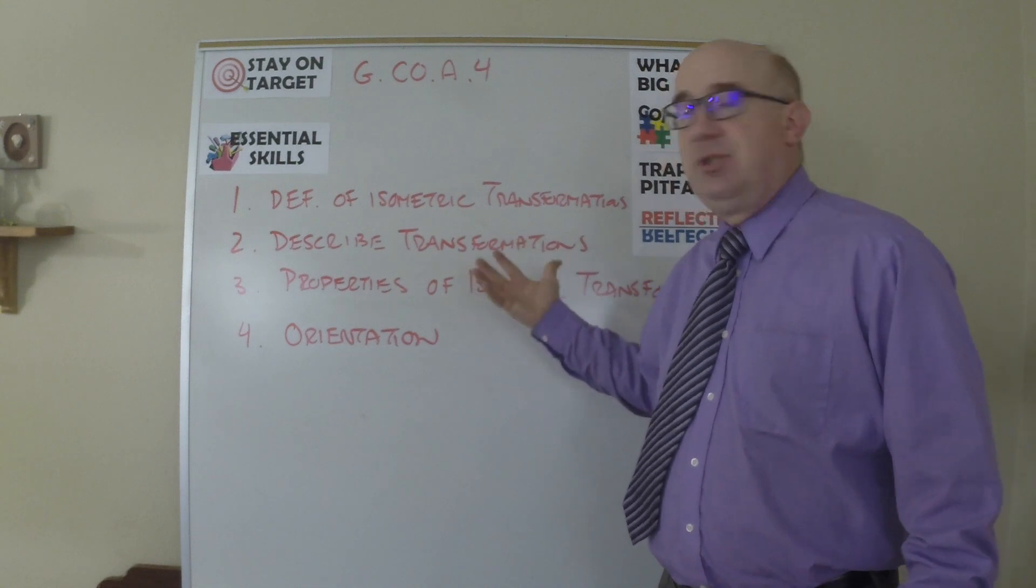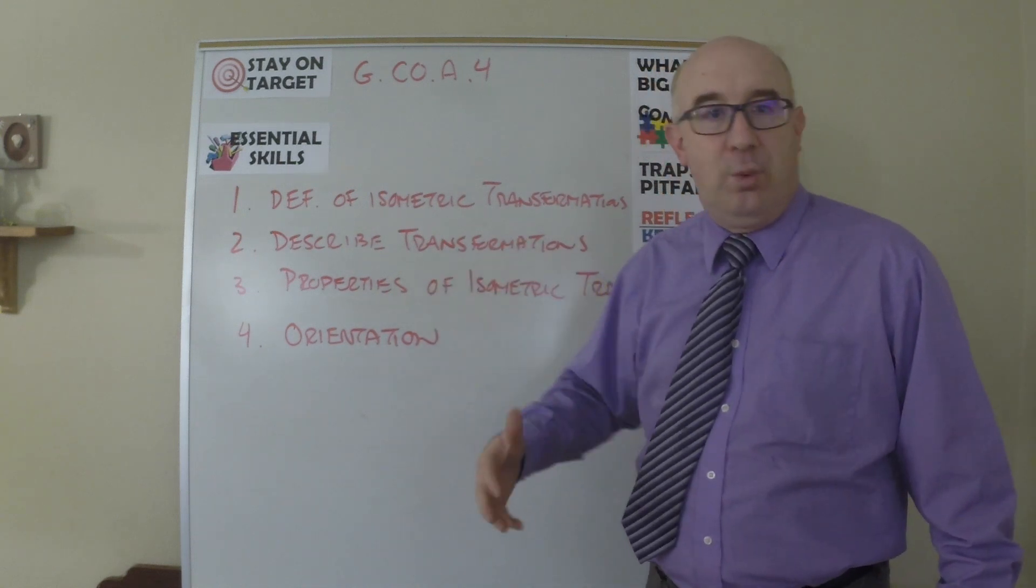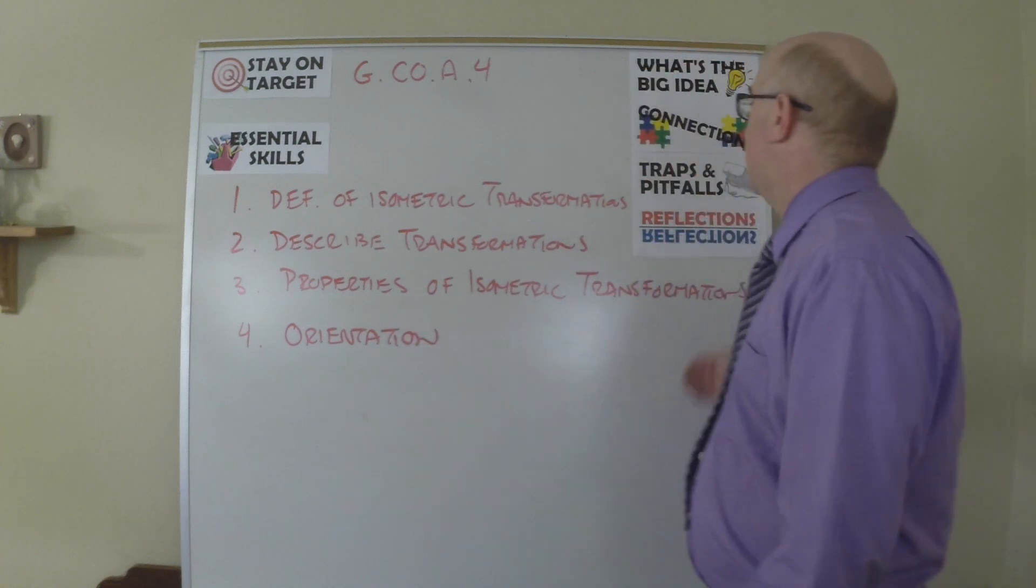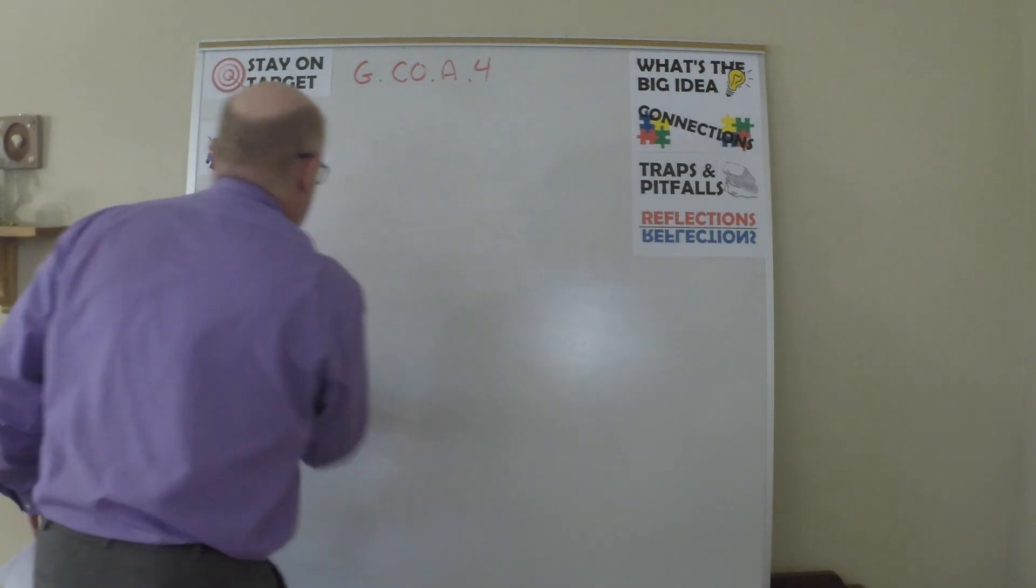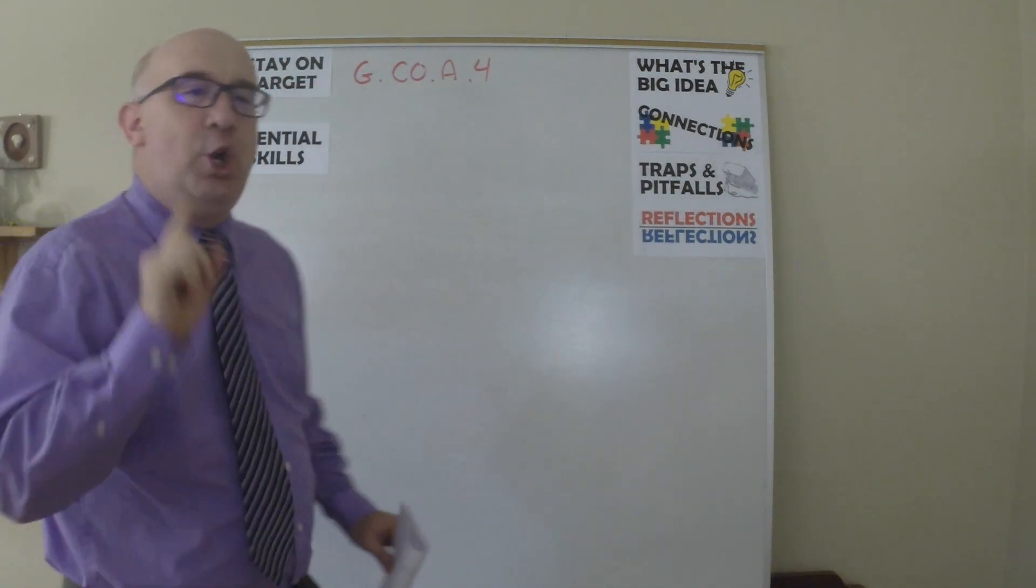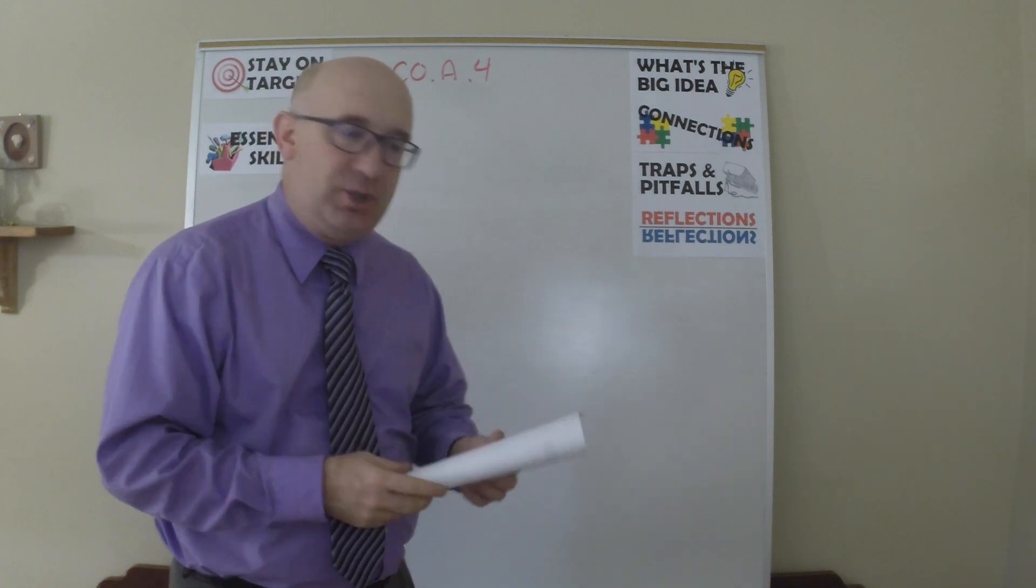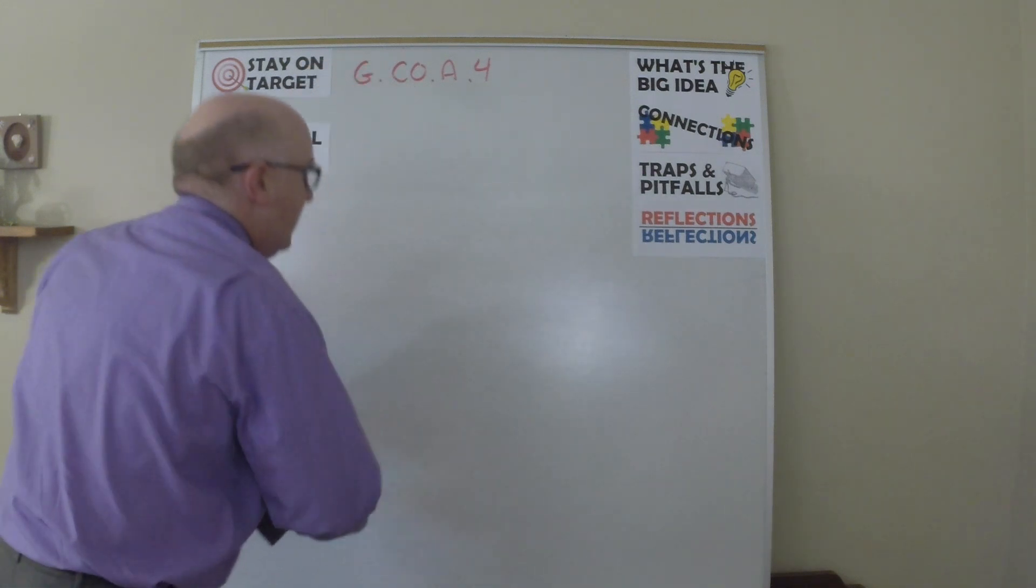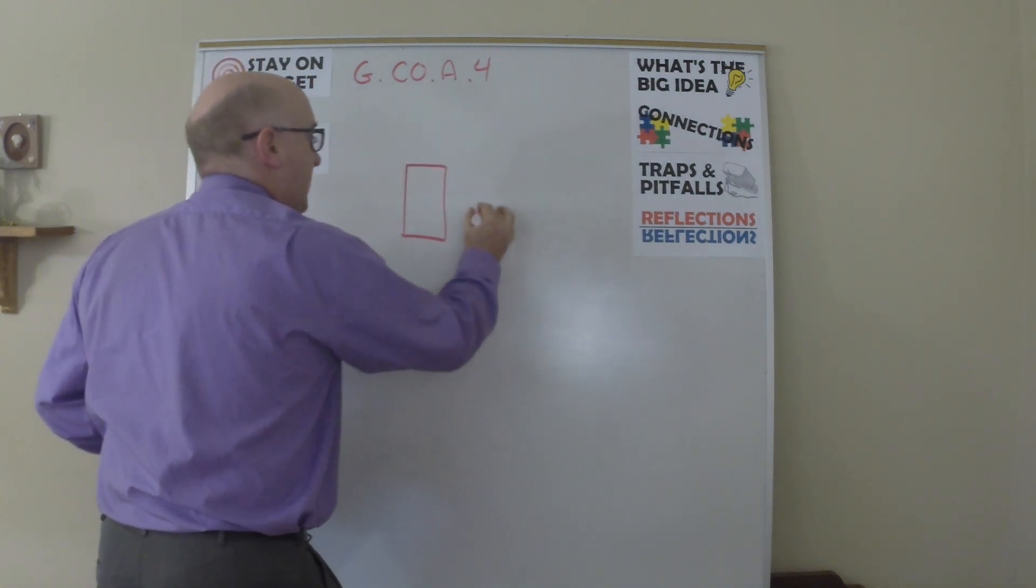What are the connections? Connecting back, of course, to the basic transformations that students should know. Connecting forward to congruence, eventually. Traps and pitfalls? The big one here, I guess, is I would say going too fast. Slow down, let it soak in. This is essential stuff. But the big thing, probably, or one of the big things, is orientation.